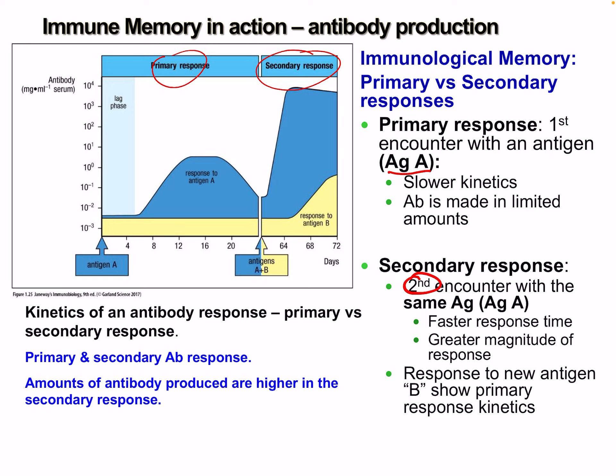The response to a new antigen shows the memory response kinetics. On first exposure to antigen A there's a slow response; on second exposure there's an immediate and stronger response. To compare, encountering another antigen will produce a similar primary-response pattern to the first encounter.